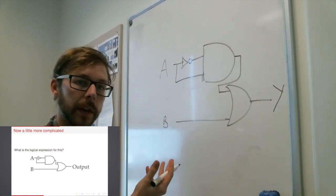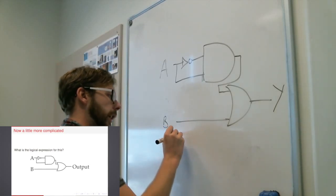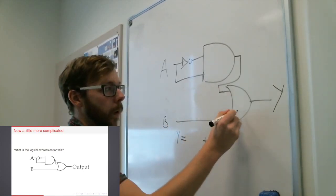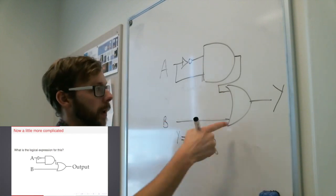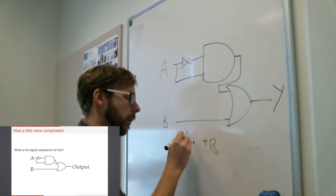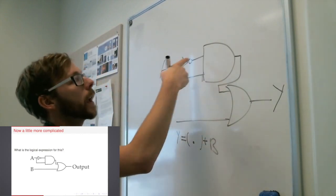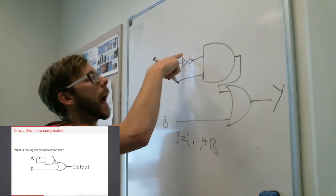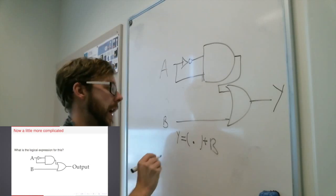Doing the exact same thing, I start from the end and work backwards and I get Y equals OR B, my input there, follow this back. I've got an AND gate again, so I put a little dot and my brackets in, and my input to my AND gate is A and NOT A.